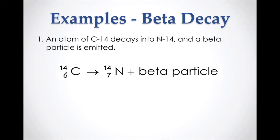Here's an example: an atom of carbon-14 decays into nitrogen-14 and a beta particle is emitted. Carbon-14 has an atomic number of six and mass number of 14. That decays into nitrogen-14 — nitrogen has an atomic number of seven, mass number of 14 — plus the beta particle. Treating this as a math equation: 14 equals 14 plus zero, so the mass number must be zero. And six equals seven plus something — that something must be negative one. So the beta particle has mass number zero and atomic number negative one.